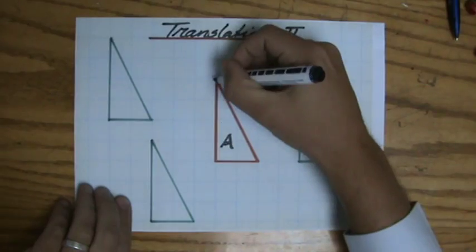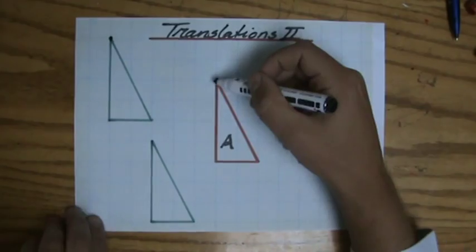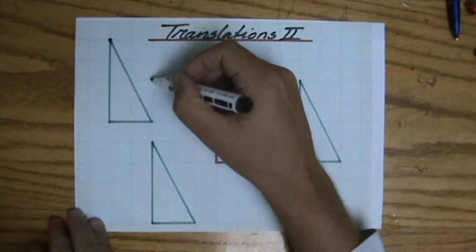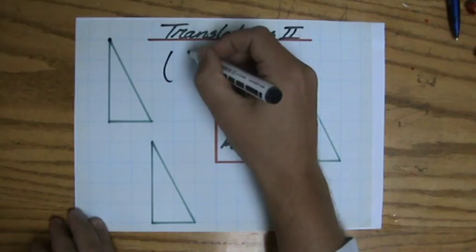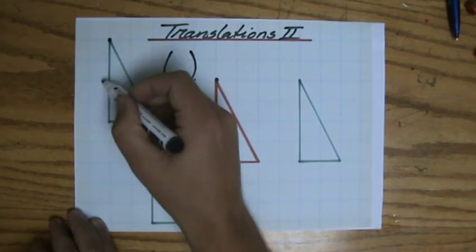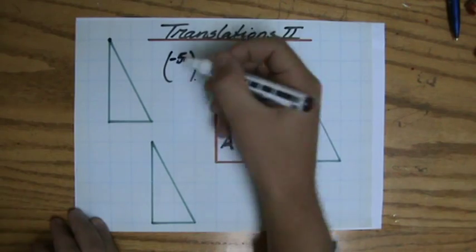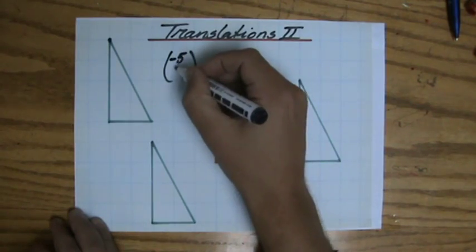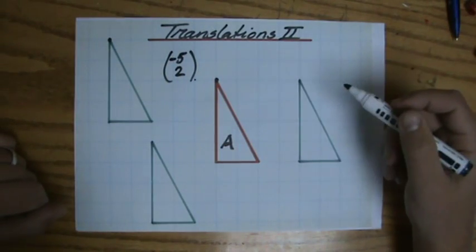First, so this point corresponds with that point. So I'm just going to count now. One, two, three, four, five to the left. And two up. So five to the left, so minus five and two up. Because if we're going to the left, that is a negative translation.